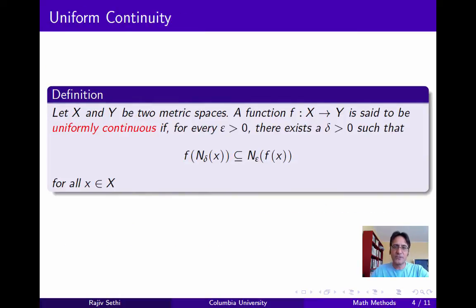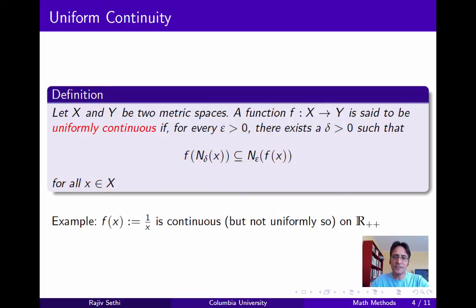Here's a somewhat stronger definition of continuity. If X and Y are two metric spaces, a function f from X to Y is said to be uniformly continuous if for every epsilon positive there exists a delta positive such that the image of the delta neighborhood of x is a subset of the epsilon neighborhood of the image of x for all x in X. In other words, for any epsilon positive, there must exist a delta that works for every point in the domain. As an example of a function that's continuous but not uniformly continuous, consider 1 over x with domain and co-domain both being the strictly positive real numbers. For any given epsilon, as x gets closer and closer to zero, we need smaller and smaller deltas, and there's no delta that works for all x in the domain.